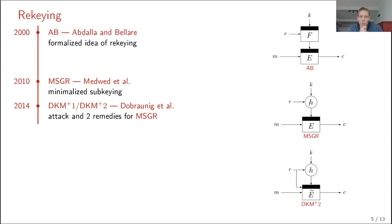Four years later, Browning et al. mounted a key recovery attack on this scheme at the birthday bound and presented two remedies, which I call DKM+1 and DKM+2. DKM+2 is particularly interesting: it uses a tweakable block cipher and puts the re-keyer on top, so the re-keyer goes into both the re-keying function and the tweakable block cipher.